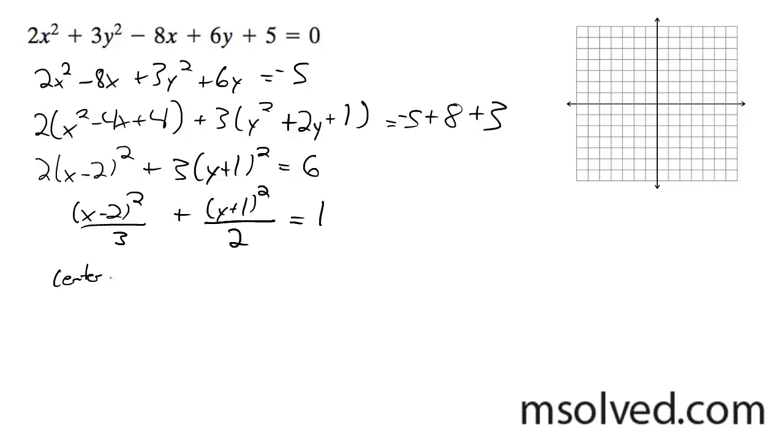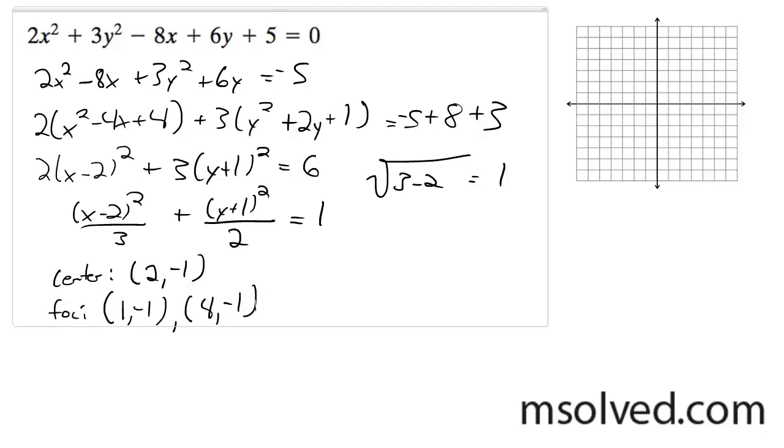Alright, so for our center, we have (2, -1). For our foci, the square root of 3 minus 2 equals 1. With our major axis being 3, we get 2 minus 1, so it's (1, -1) and (3, -1).